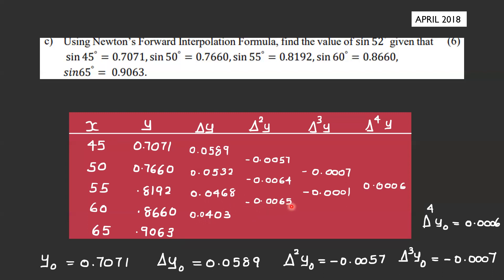Second differences: 0.0403 - 0.0468 = -0.0065; 0.0468 - 0.0532 = -0.0064; 0.0532 - 0.0589 = -0.0057. Third differences (delta cube): -0.0001; then approximately 0.0006.